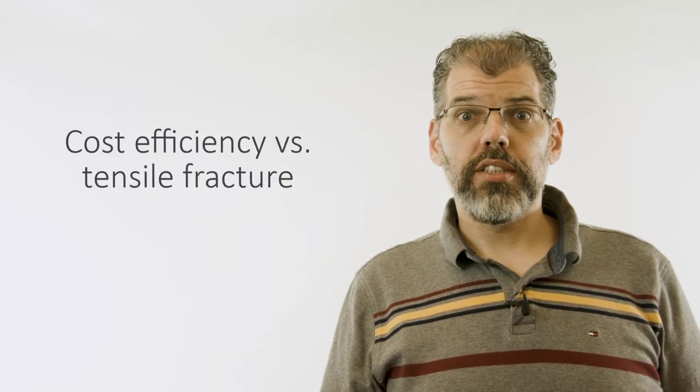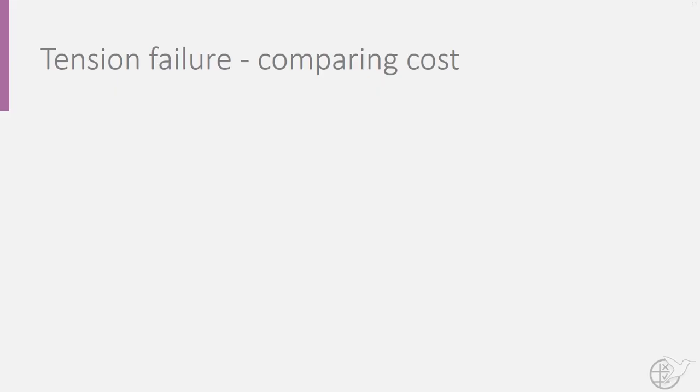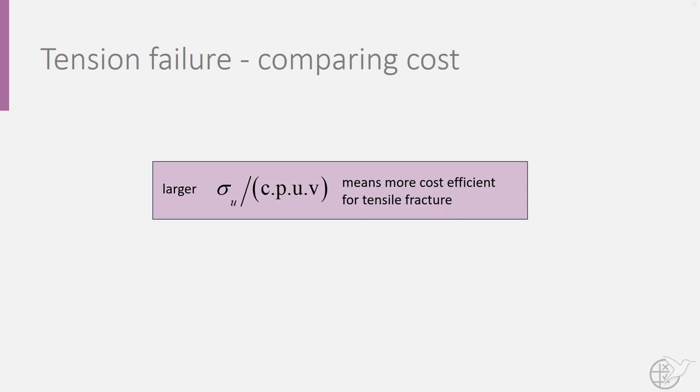We can do a similar analysis for different constraints and characteristic equations. For instance, if we want to look at the material cost efficiency for tensile fracture, our selection criteria would reduce to the ratio of ultimate strength over the cost per unit volume of the material.